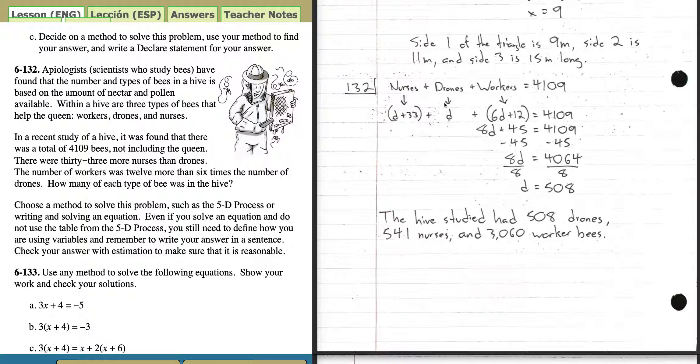I kind of drew an arrow. Nurses are this, drones are this, workers are this. You add the three of them up and it should equal 4,109. So simplify all of this first. D plus D plus 6D is 8D. And 33 plus 12 is 45. Then you have 8D plus 45 equals 4,109. Subtract 45 from both sides to get rid of the 45. You have 8D equals 4,064. Then to undo 8 times D, divide both sides by 8. So D is 508. D is drones, so that means there's 508 drones. So the hive studied has 508 drones, 541 nurses, and there are 3,060 worker bees.